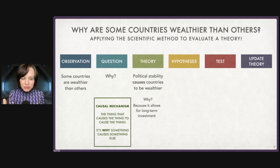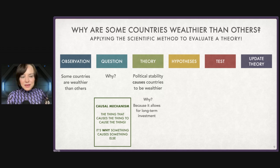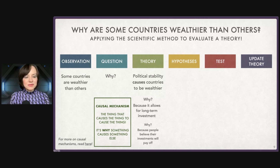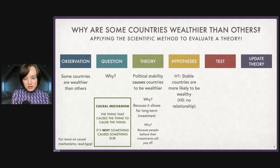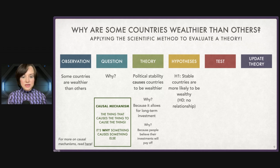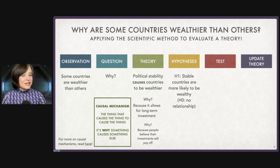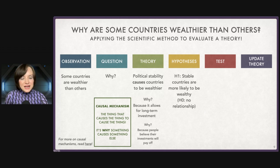Even just going down one level can really improve our studies and thinking. I encourage you to drill down to the causal mechanism as much as you can — even if you don't investigate it, it helps steer your ship in terms of where to look and how to thoughtfully draw conclusions. We can't really test the broad theory out of the gates. But we can form a hypothesis that sheds light on whether our theory is on the right track. My null hypothesis is that there's no relationship between stable countries and wealthy countries. If I find no relationship, I don't feel great about my theory. If I see a relationship — even just a correlation or association — that doesn't prove my theory, but it says maybe I'm on the right track.